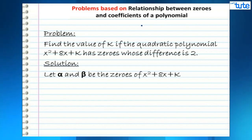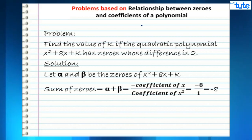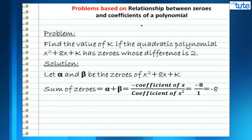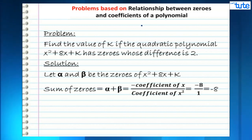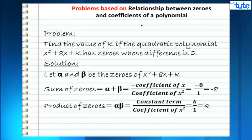Let alpha and beta be the zeros of x² + 8x + k. The sum of zeros, alpha plus beta, equals minus coefficient of x upon coefficient of x². The coefficient of x is 8, so the numerator is minus 8, and coefficient of x² is 1, giving minus 8 upon 1 which equals minus 8. The product of zeros, alpha times beta, equals constant term upon coefficient of x², which is k upon 1, equal to k.